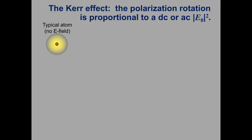There are other ways to get a similar effect, and depending on how it's done they are given different names. With the Pockels effect, the polarization change is proportional to the voltage or electric field. In other materials, the polarization change is proportional not to the electric field but to the electric field squared. This dependence on the type of material is what distinguishes them. When the effect is proportional to the electric field squared, it's called the Kerr effect.